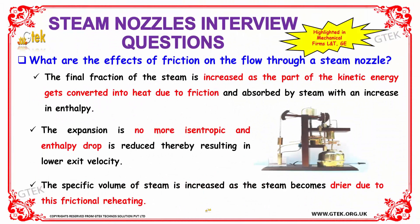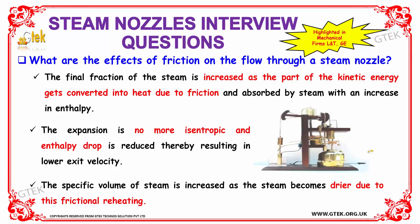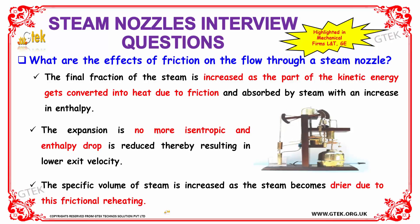What are the effects of friction on the flow through a steam nozzle? The dryness fraction of steam is increased as part of the kinetic energy gets converted into heat due to friction and is absorbed by steam with an increase in enthalpy. The expansion is no more isentropic and the enthalpy drop is reduced, thereby resulting in lower exit velocity. The specific volume of steam is increased as the steam becomes drier due to frictional reheating.